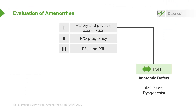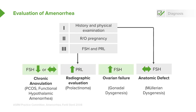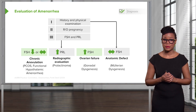If the FSH is normal — neither high nor low — you should suspect an anatomic defect such as agenesis or dysgenesis. If the prolactin is high, perform a radiographic evaluation for a prolactinoma, unless there is an obvious cause for the elevation. If the FSH is elevated, this can indicate ovarian failure or ovarian insufficiency, as seen in gonadal dysgenesis. If the FSH is low or equivocal, this suggests chronic anovulation as seen with PCOS, or functional hypothalamic amenorrhea.